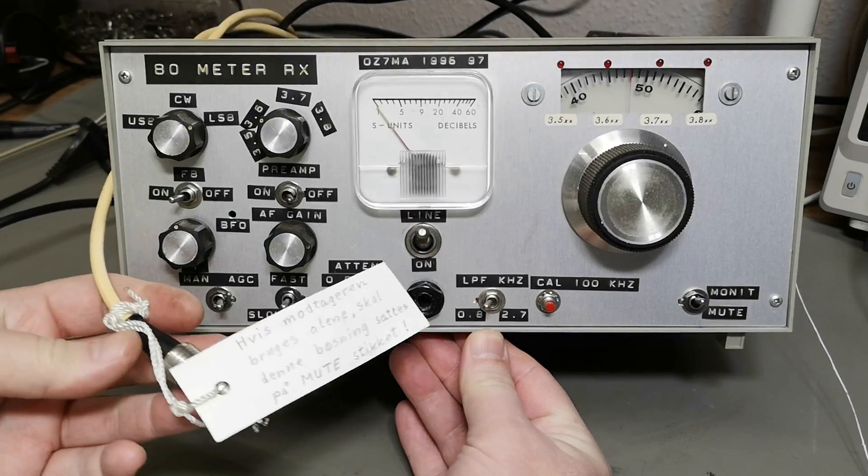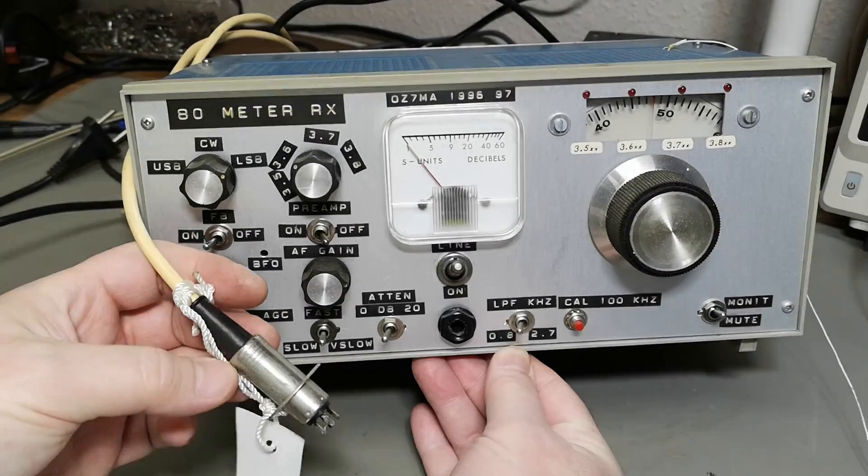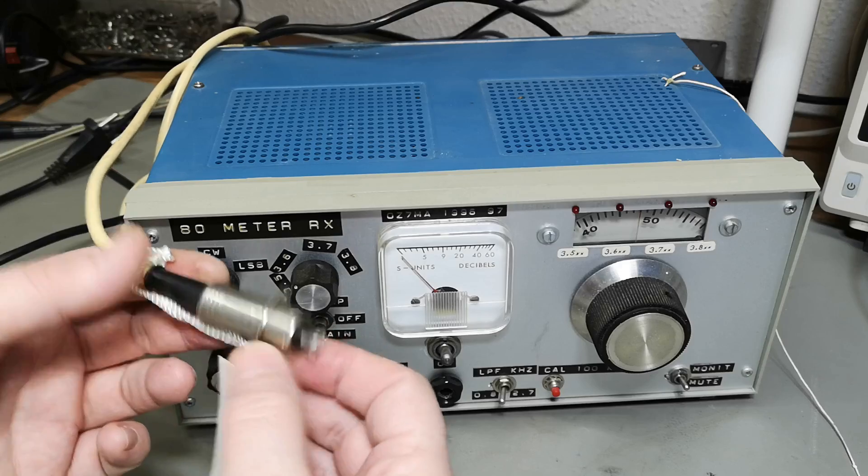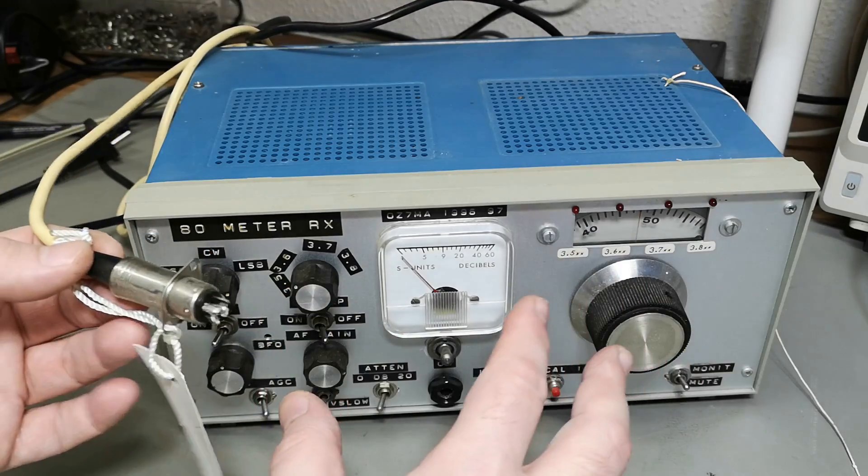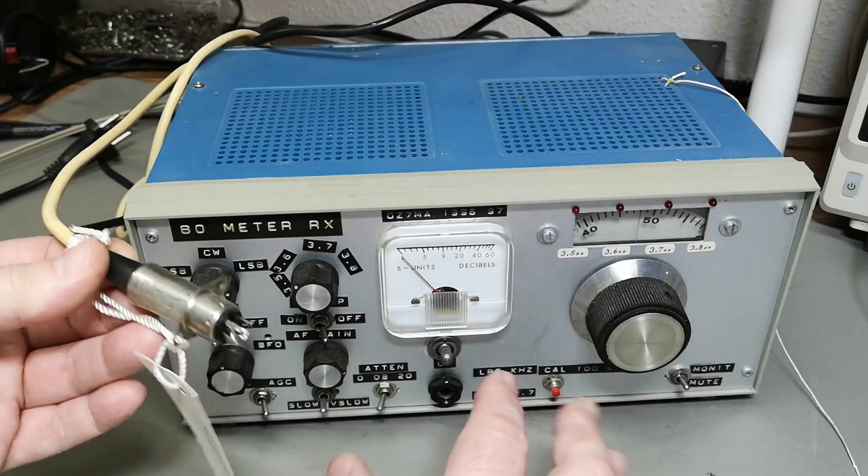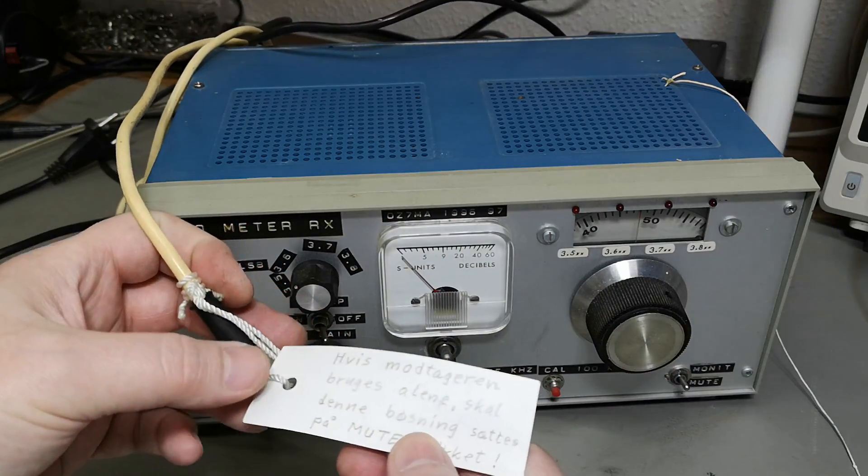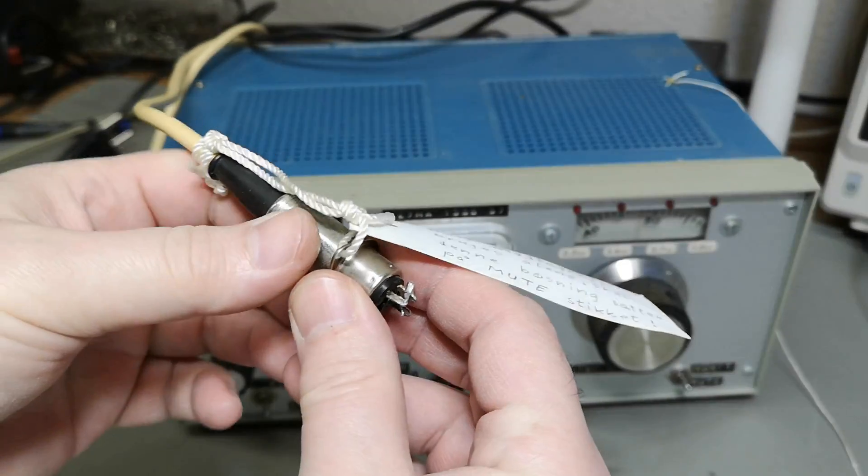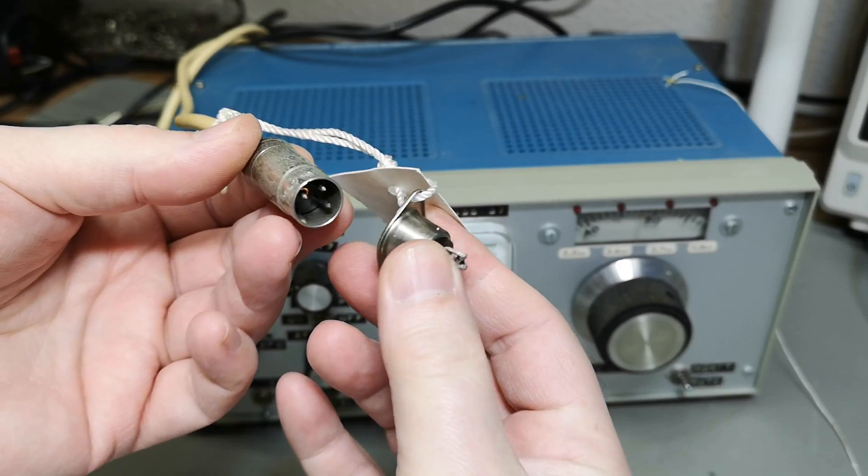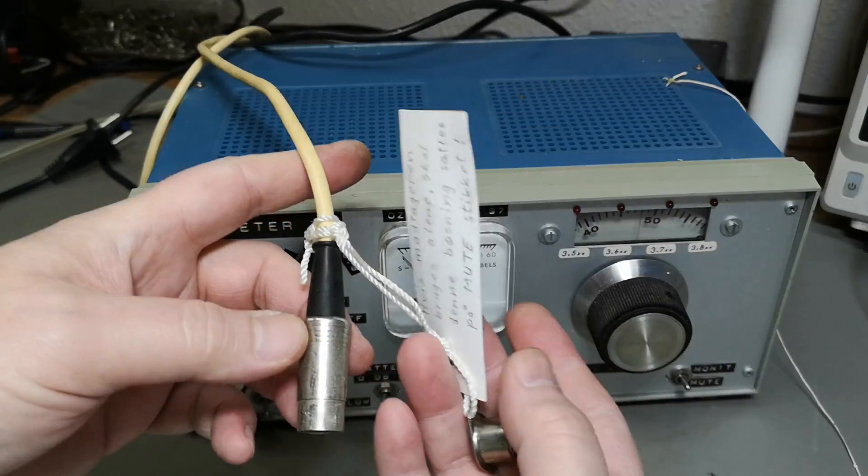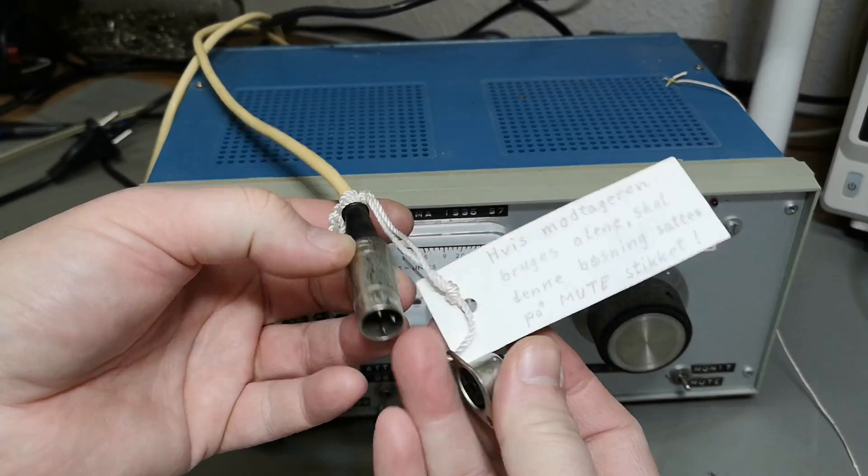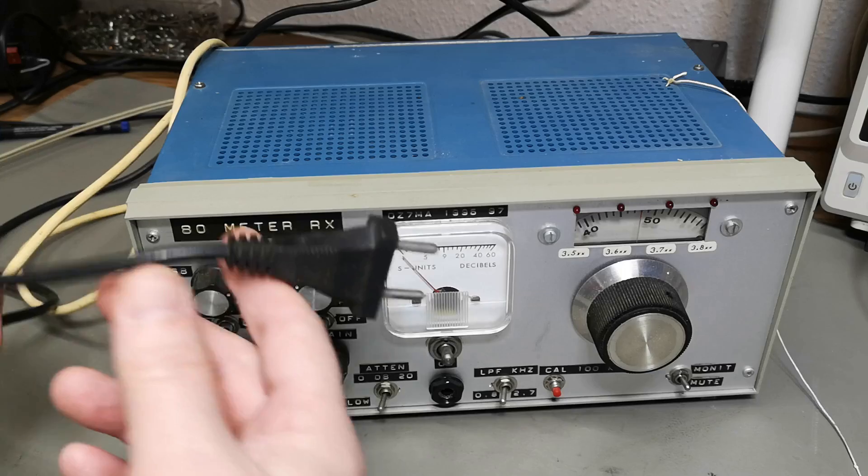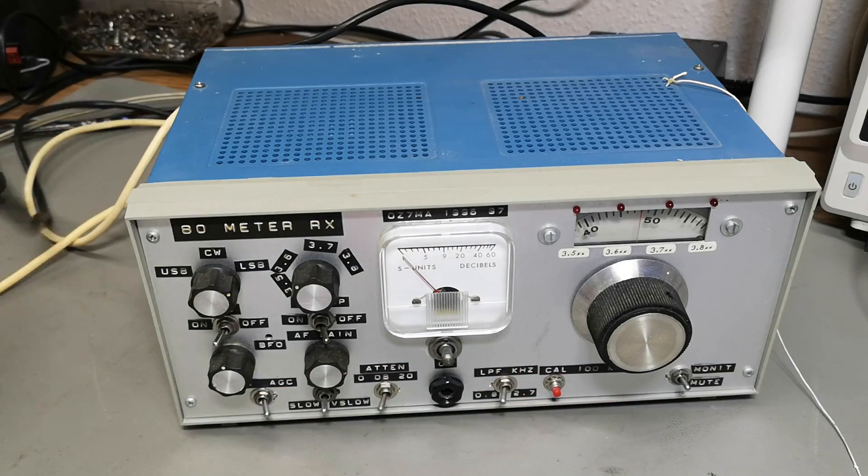There's a cable that goes to the transmitter with a Dean connector here that says mute. This will be for RX/TX switching - of course when you're transmitting, the transmitter will control the receiver and turn the receiver silent. It even says here that if you need to use the receiver alone, then you should connect this connector on the mute. This is a super genius way to do it - this way you enable the receiver to work.